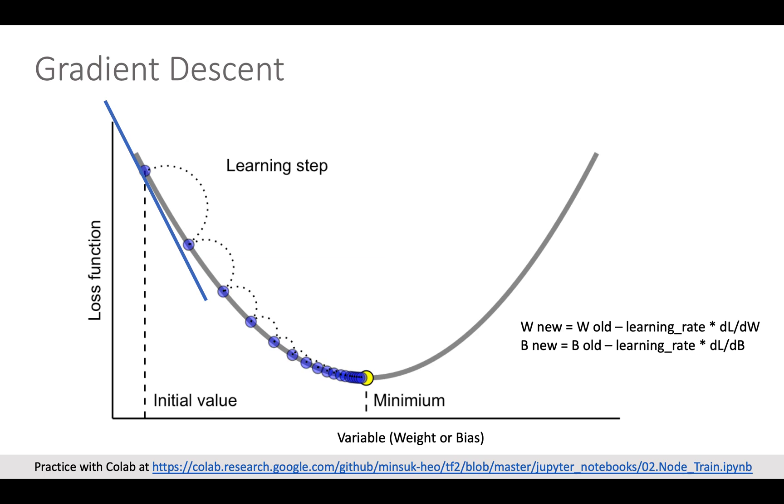Gradient descent is a way to find the variable which results the minimum loss. Let's look at initial value loss here. It is very high and its gradient slope, which is blue line, is negative. So we move the variables to the positive side.